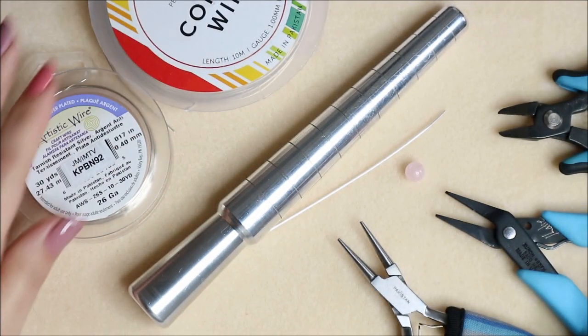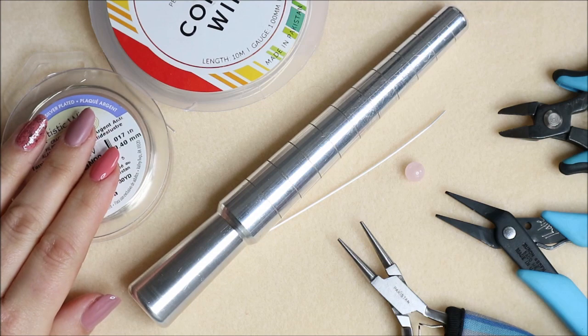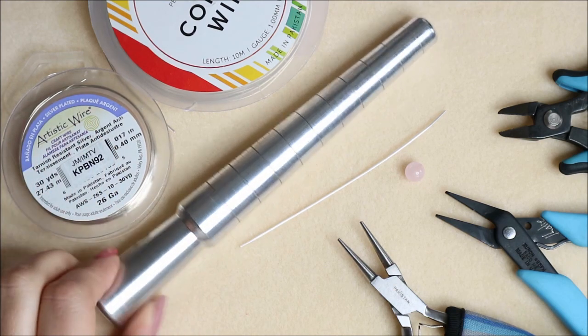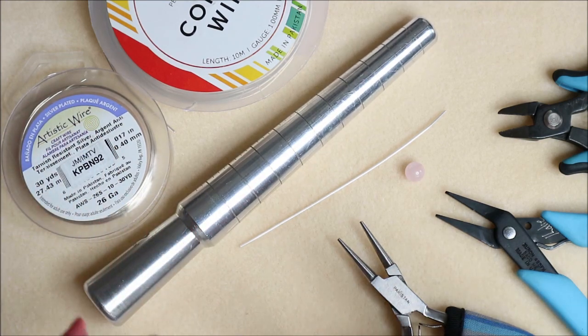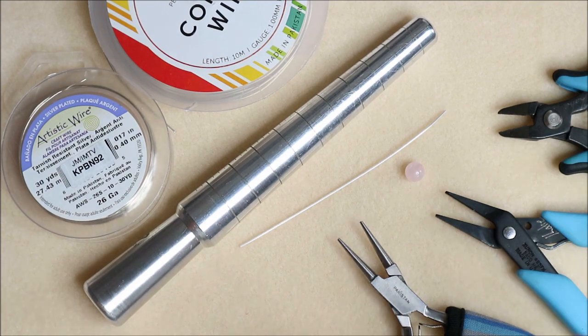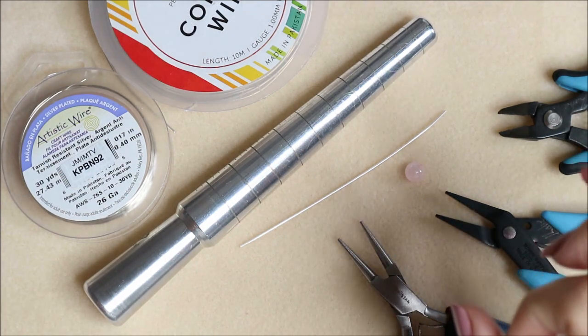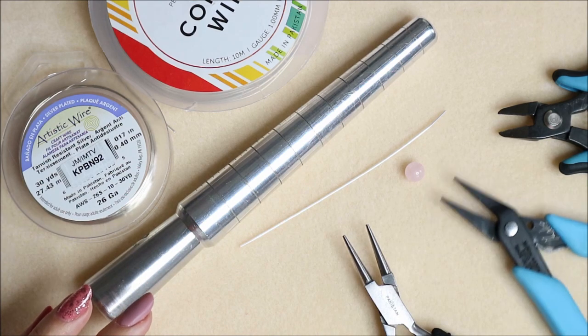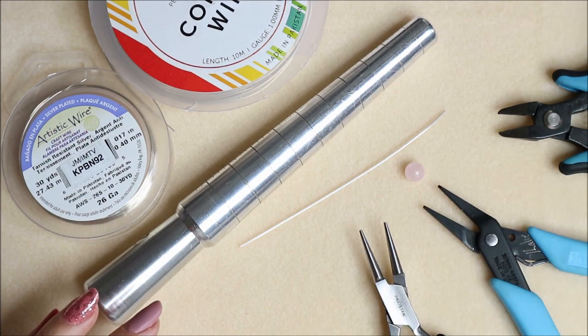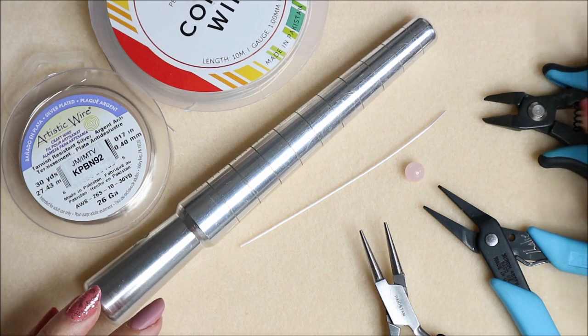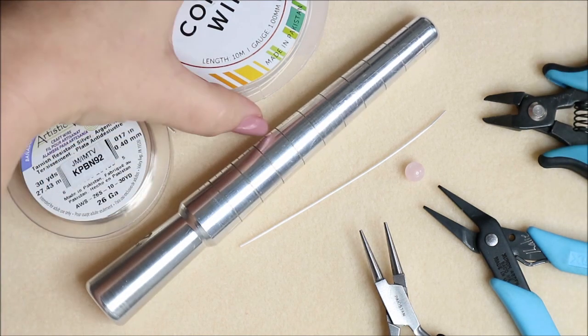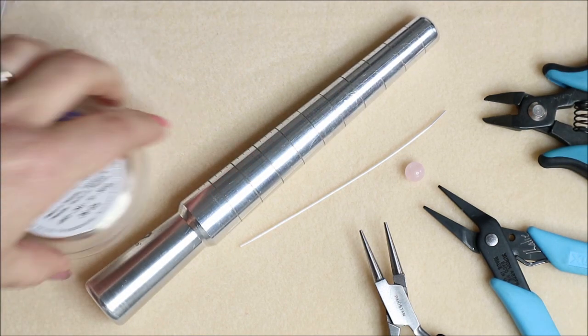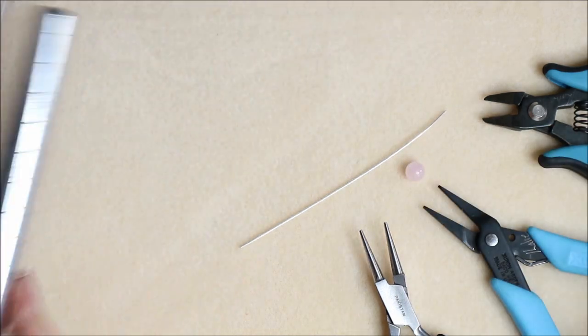What we're going to need is some one millimeter wire, some 0.4 millimeter wire. I'm using a ring mandrel, but you could use a chunky pencil or something, a chunky pen like the big felt tip pens. We're also going to need some round nose pliers, some chain nose or narrow nose pliers, some flush cutters or snips, and we'll need our eight millimeter bead.